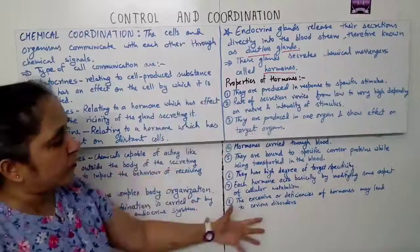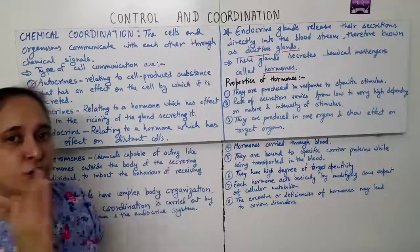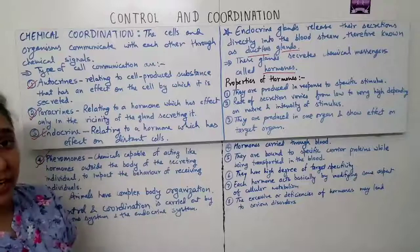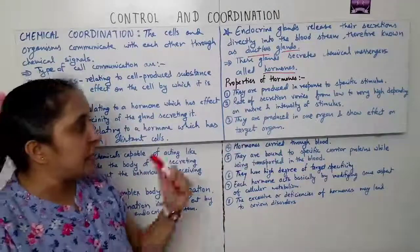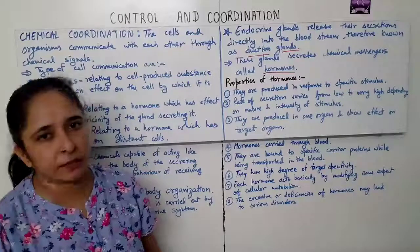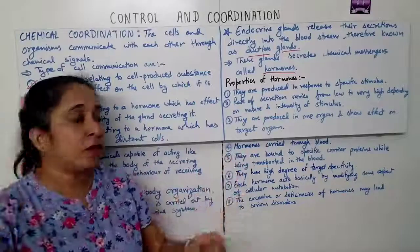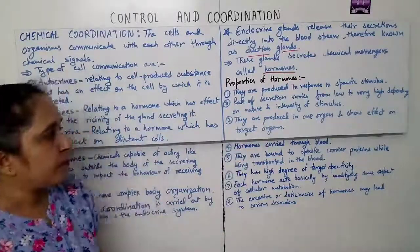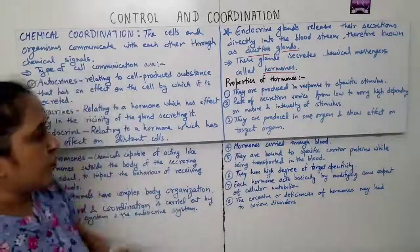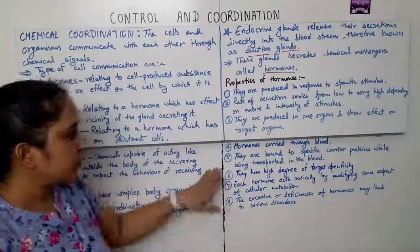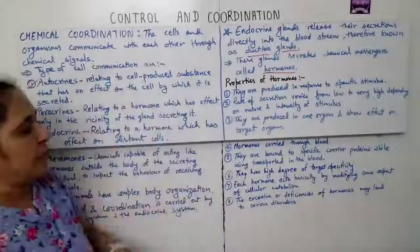Now the general properties of hormones. First, they are produced in response to specific stimuli. Second, the rate of secretion varies from low to very high depending upon the nature and intensity of the stimulus. Third, they are produced in one organ and show effect on the target organ — secretion occurs at one site and effect at another.